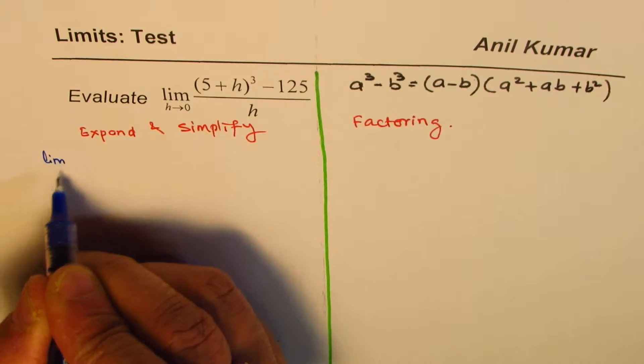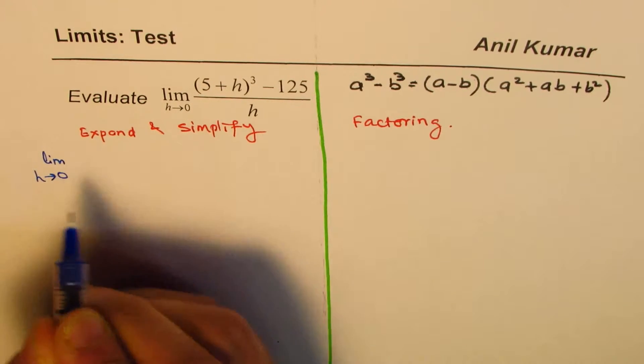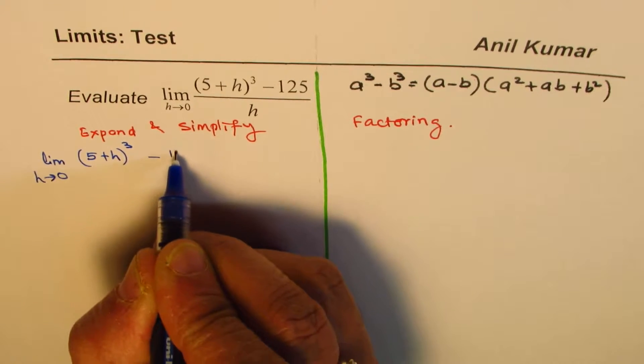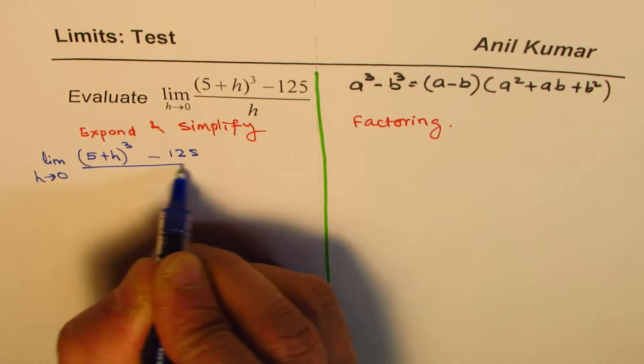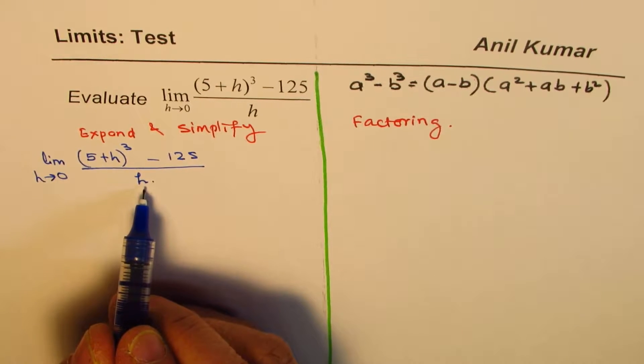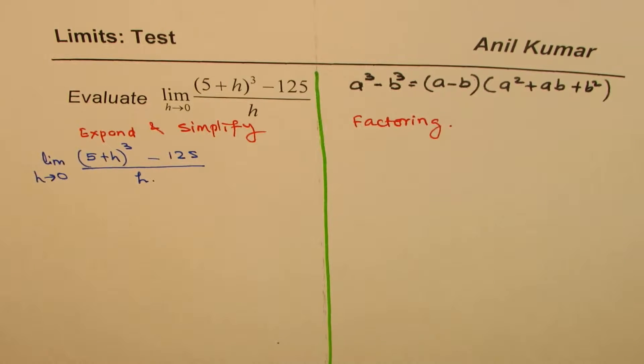Let's first solve this question by expanding. So, what we have here is limit h approaches 0, 5 plus h whole cube minus 125 divided by h. Now, if I substitute 0 here, what do I get? Test it out. If I substitute 0,